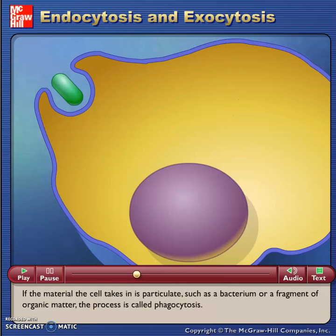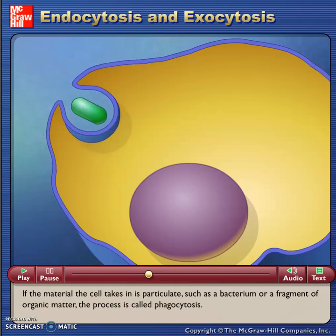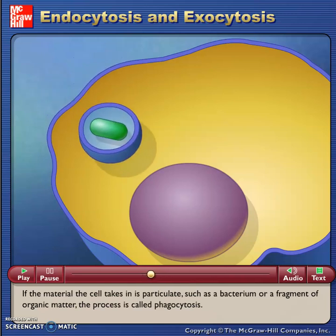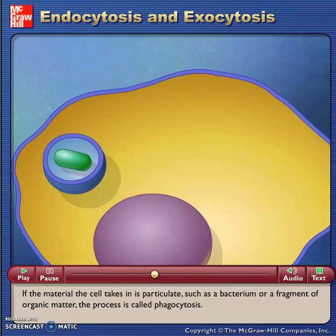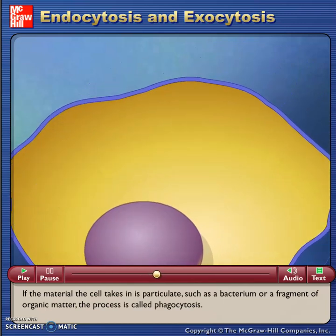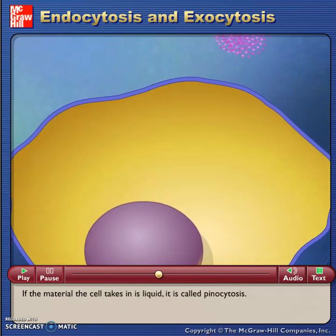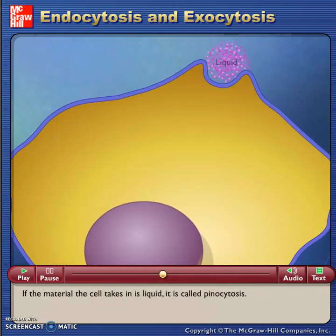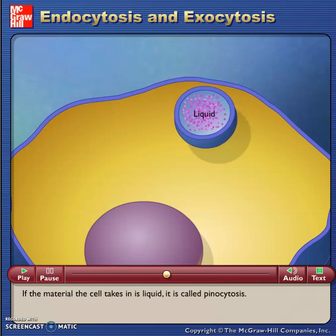If the material the cell takes in is particulate, such as a bacterium or a fragment of organic matter, the process is called phagocytosis. If the material the cell takes in is liquid, it is called pinocytosis.